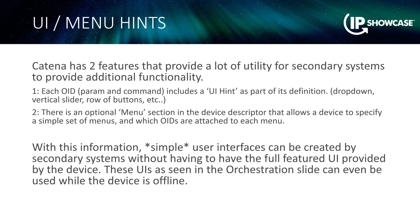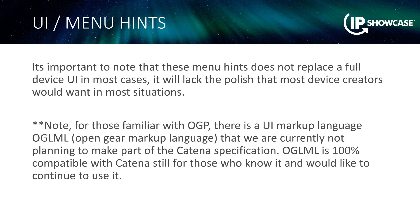The menu hints feature is one of my favorites. It allows you to define — or provides you with a hint of — what type of menu item you should use on your UI for a given parameter. It does not create a UI for you; it just makes it easier for you to create one. Also worth noting: if you're familiar with OGP, there is something called OGLML — a markup language for OGP — and while we're not planning on including that within the Katina specification at this moment, it would work and it would absolutely work for Katina.